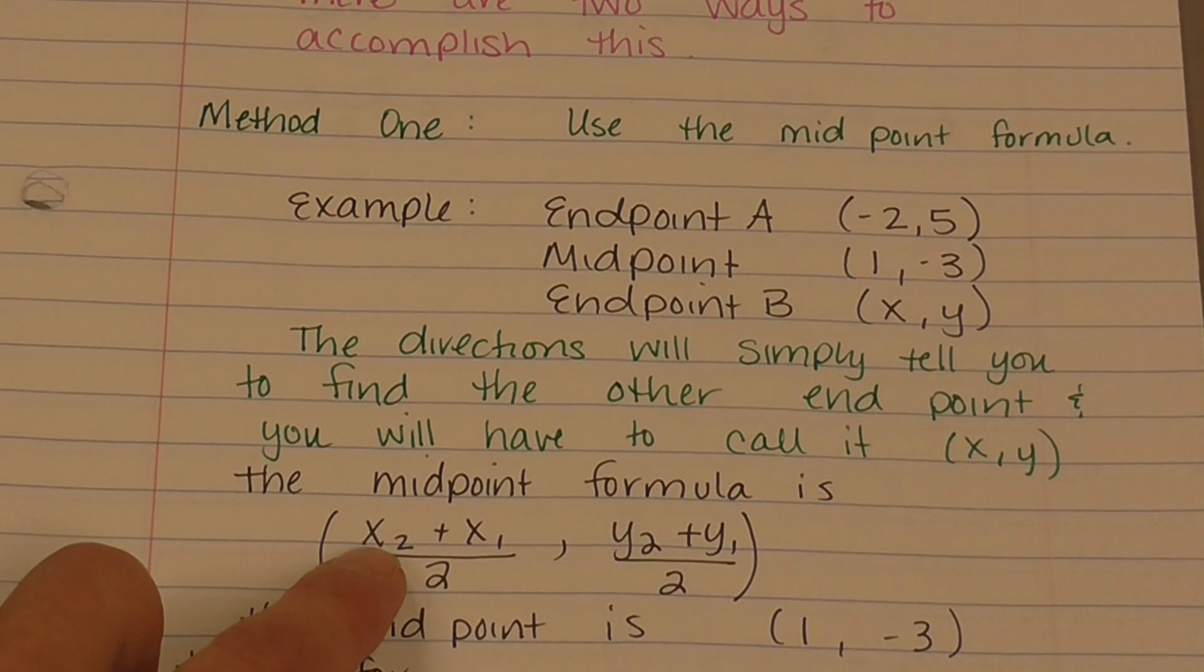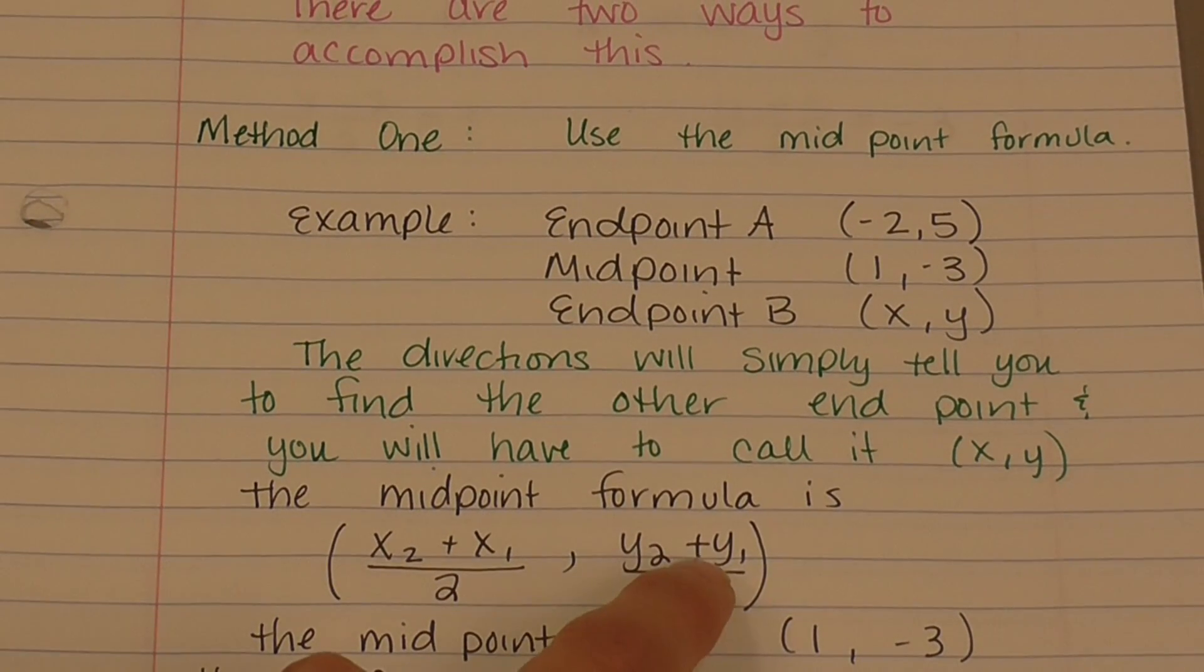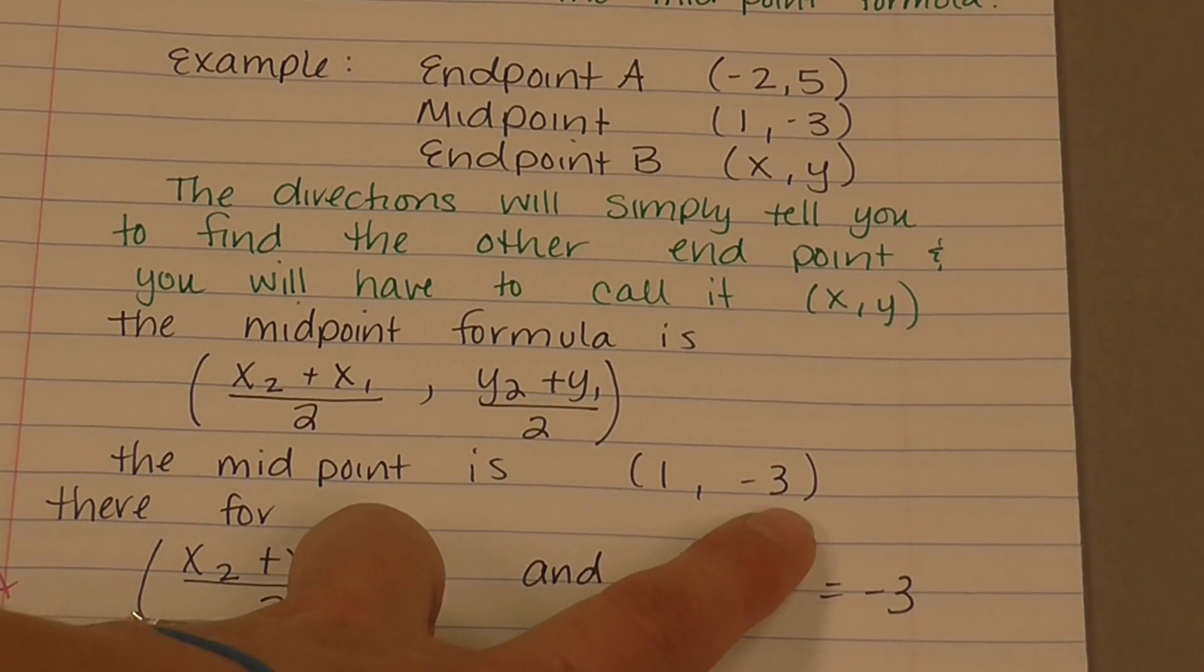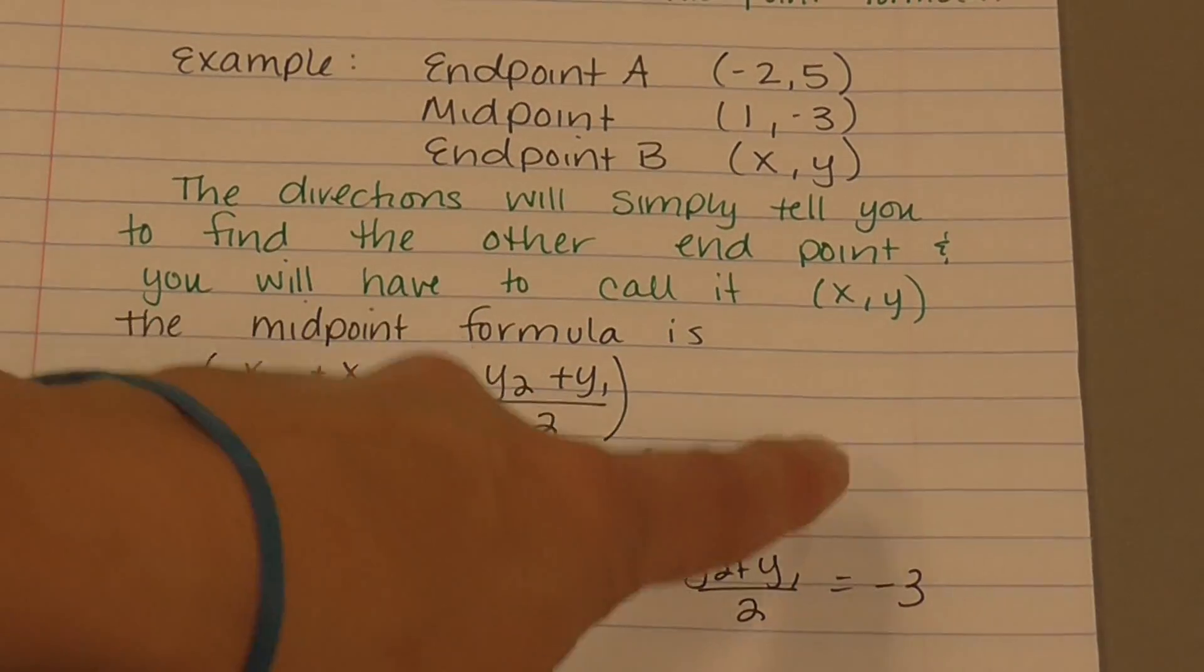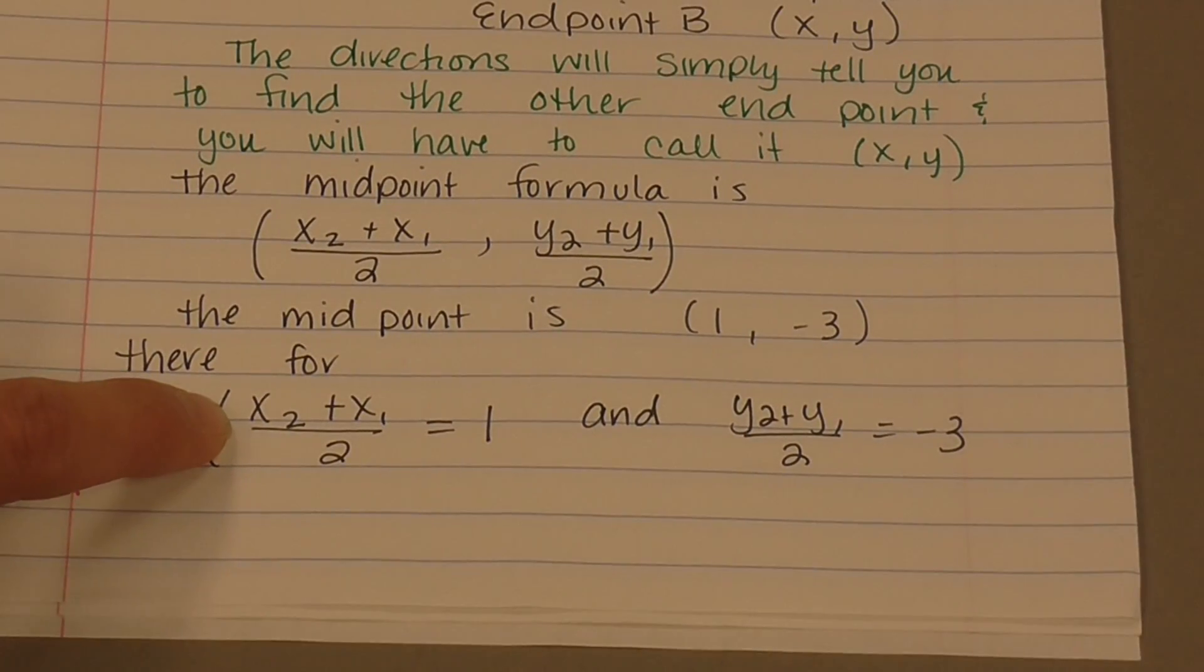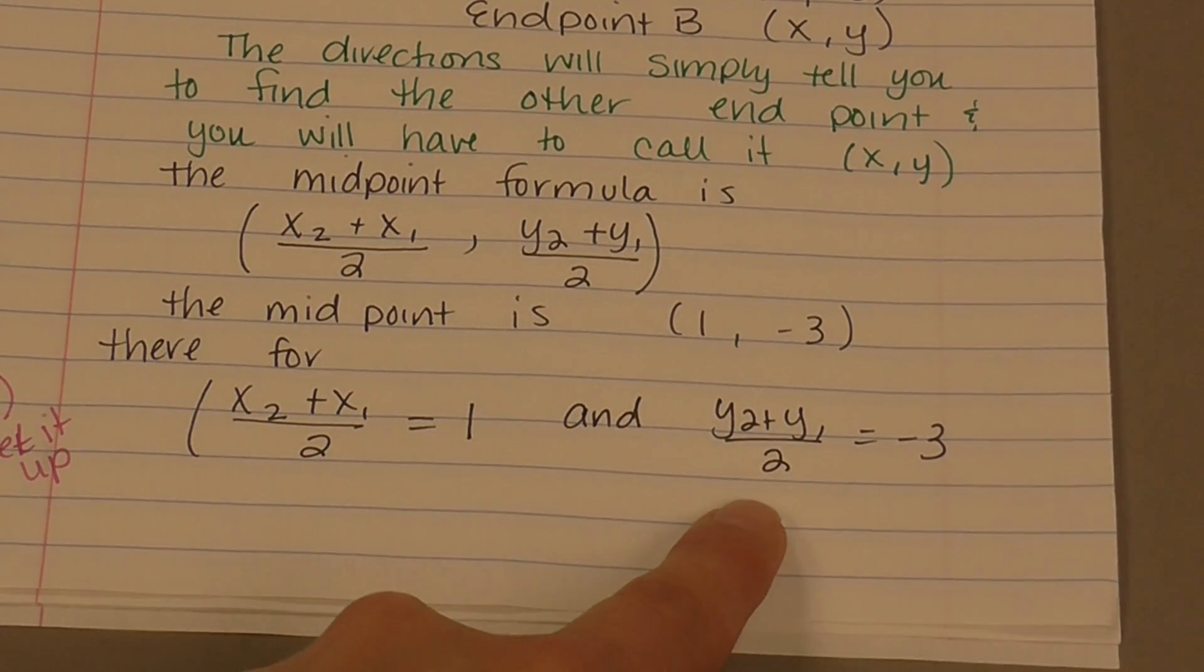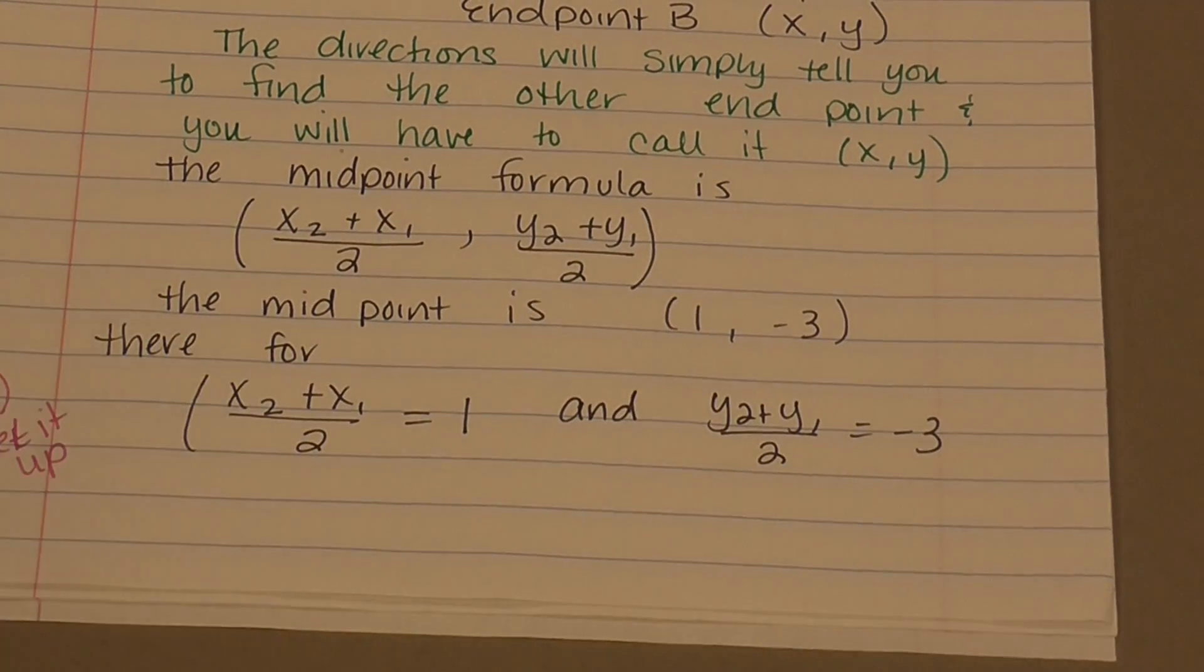So our midpoint formula is x sub 2 plus x sub 1 divided by 2, and y sub 2 plus y sub 1 divided by 2. That is the midpoint formula, but it tells you that the midpoint is 1, negative 3. So if I had my two endpoints and I used this formula, this is what I would get. So this means that x sub 2 plus x sub 1 over 2 equals 1. So this is our first step, we're going to set it up. Our y's added together divided by 2 equals negative 3. I pulled that straight from the midpoint that they gave me.